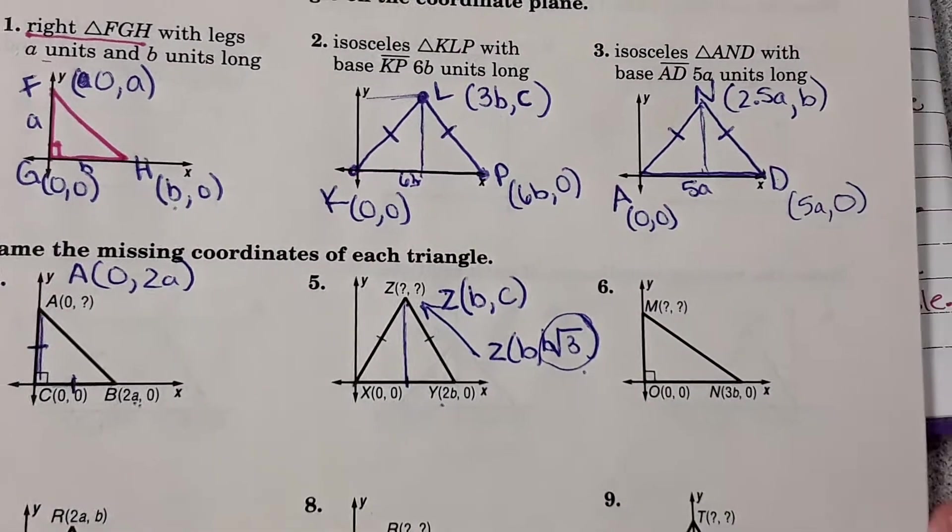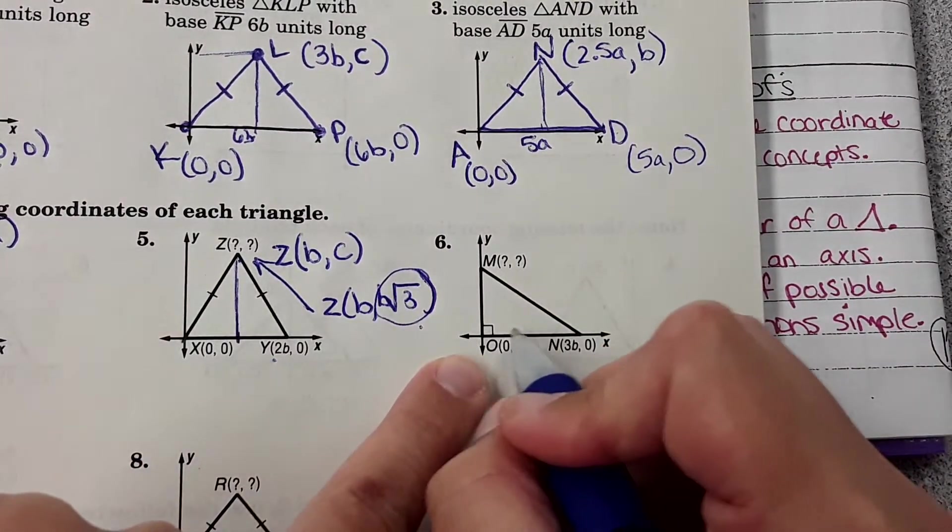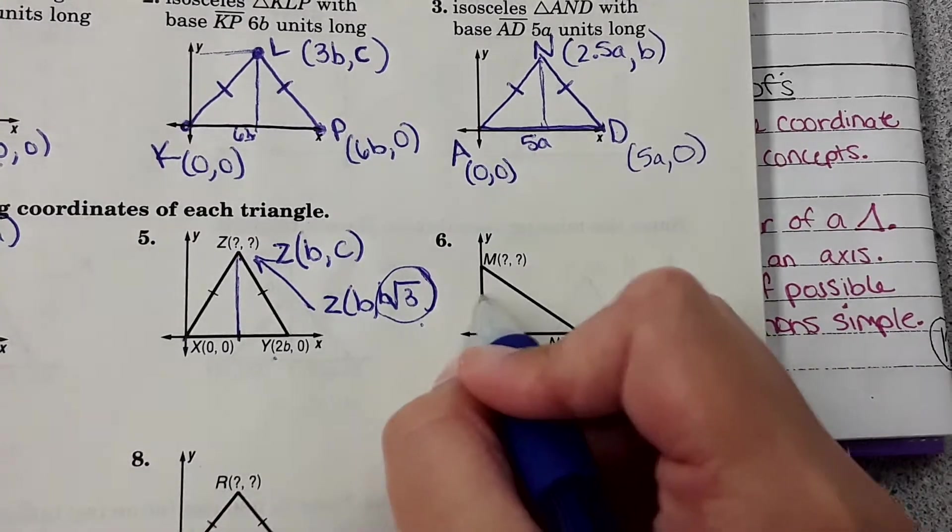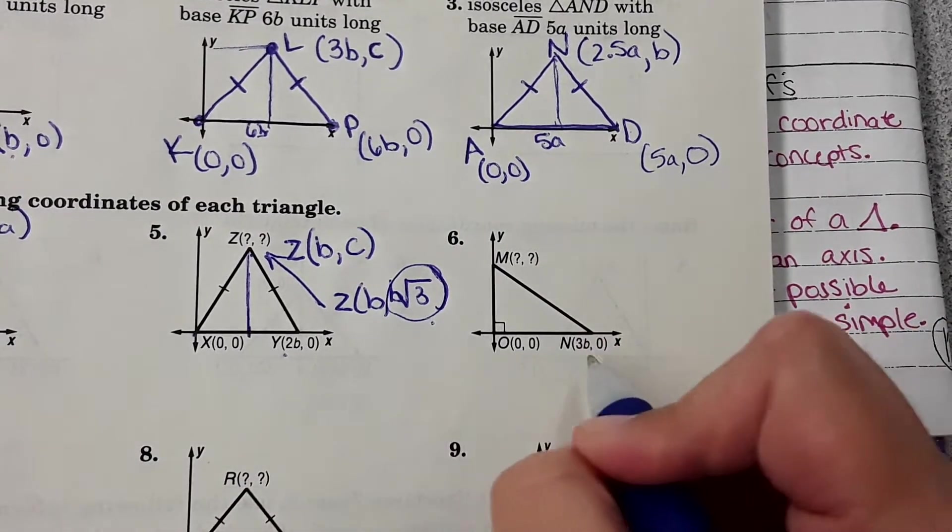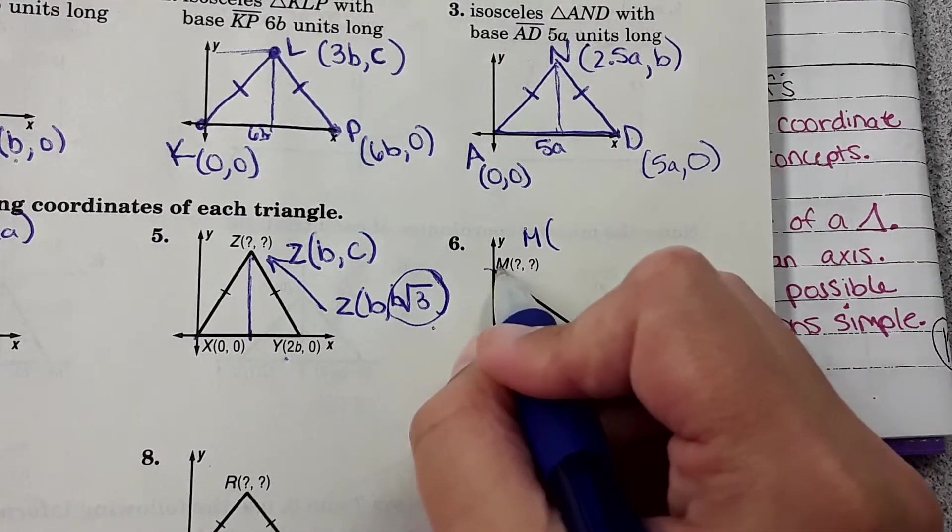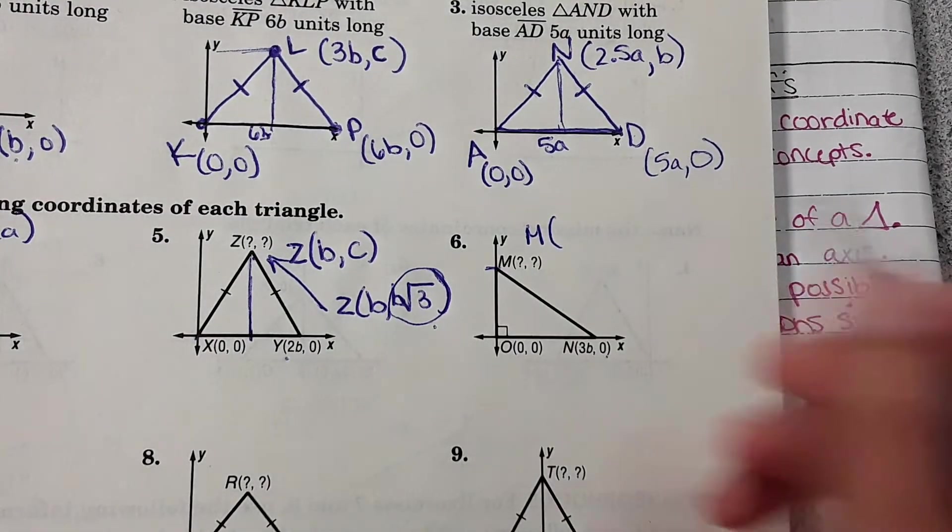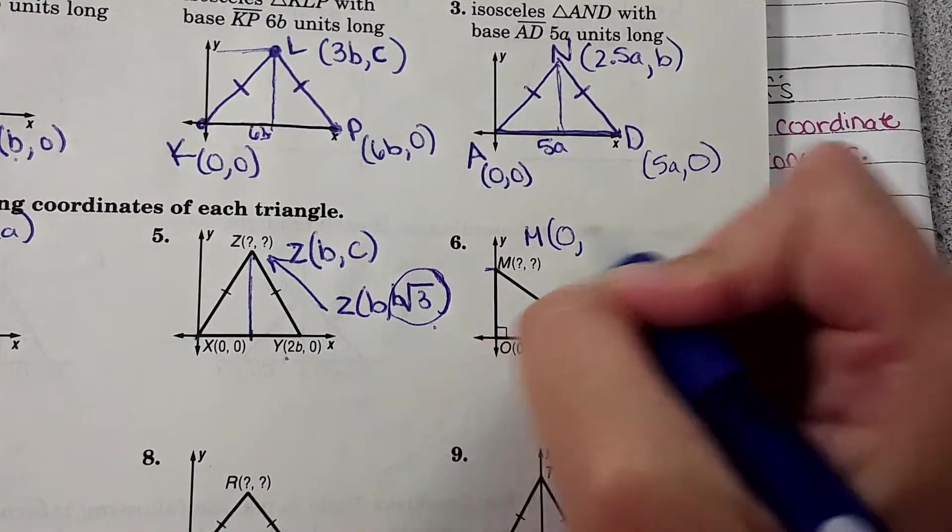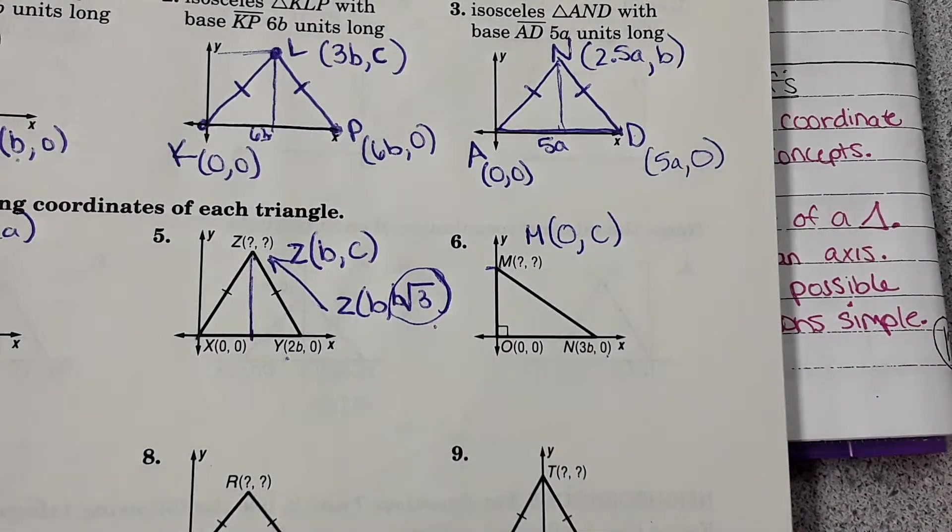Okay, number six. Here it doesn't give us as many clues. It doesn't show it as isosceles. So for M, whatever it's going up this far, well it's going over zero and then it's going up. We'll just choose a letter for the variable.